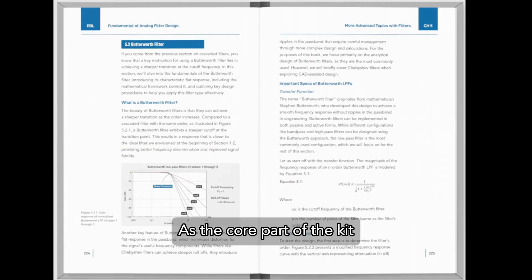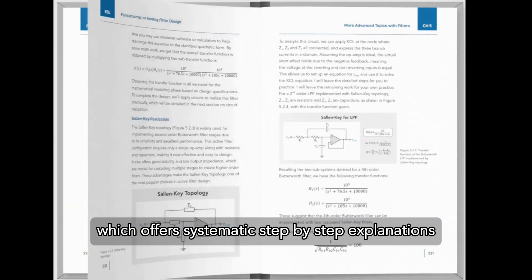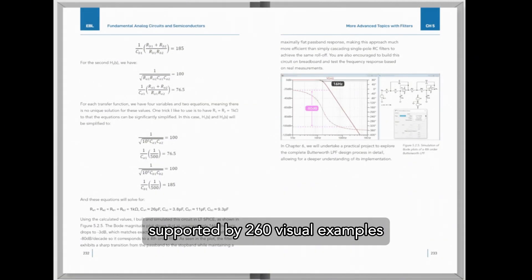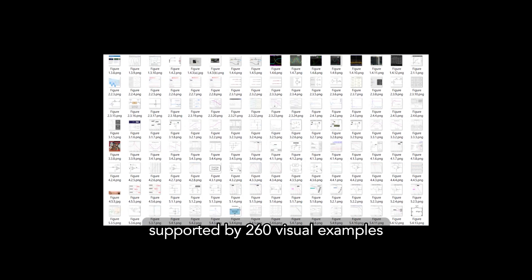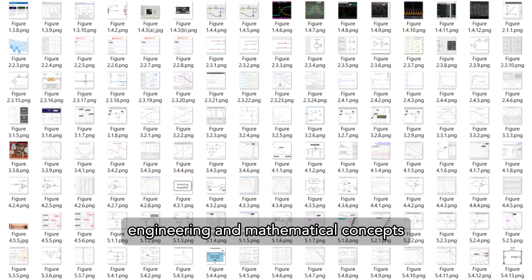As the core part of the kit, you get this newly written 300-page book, which offers systematic step-by-step explanations, supported by 260 visual examples to clarify complex engineering and mathematics concepts.